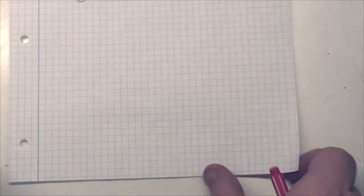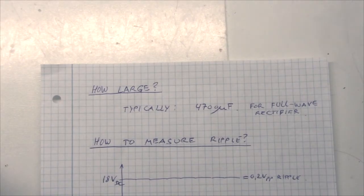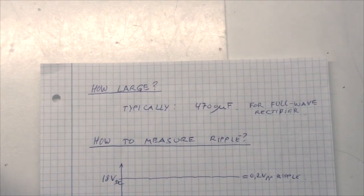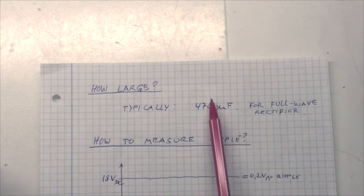So, the question is probably how large should my capacitor be? And a good typical value is 4700 microfarads for a full wave rectifier. You can go lower if you use a voltage regulator on the output, but I think this is a good starting value.